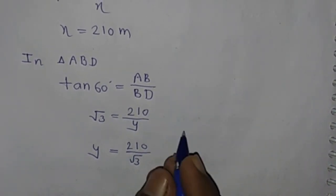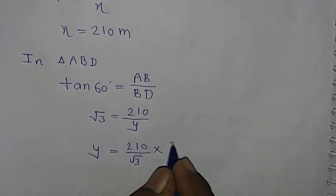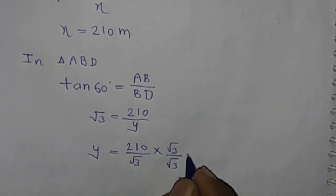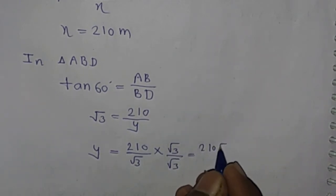Rationalizing the denominator: 210/√3 = 210√3/3 = 70√3.